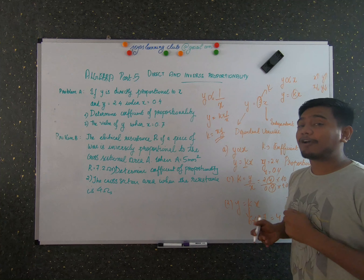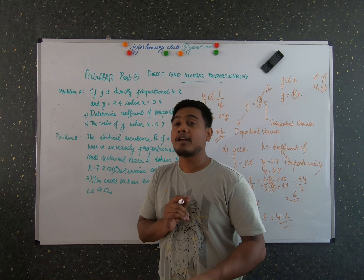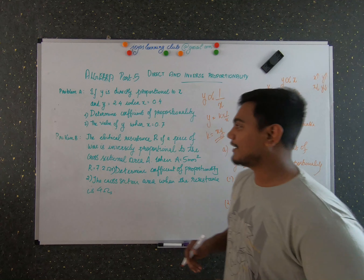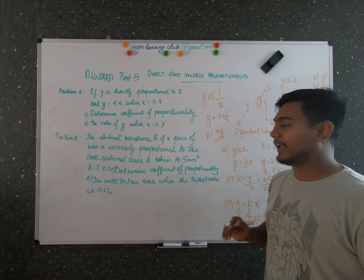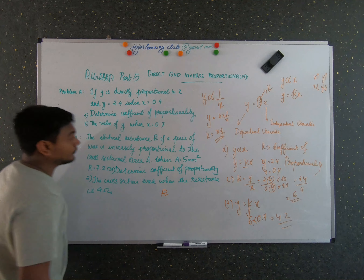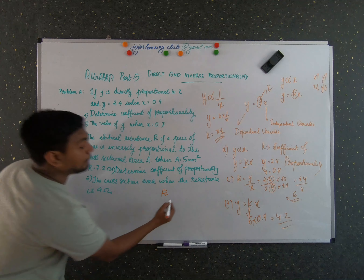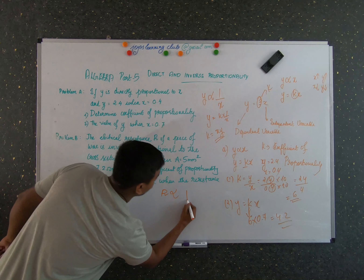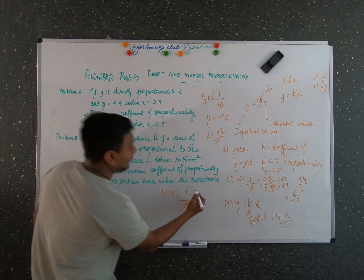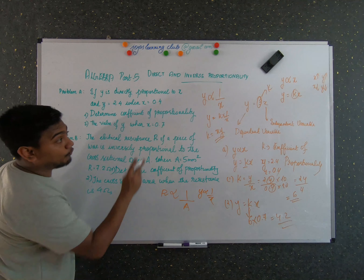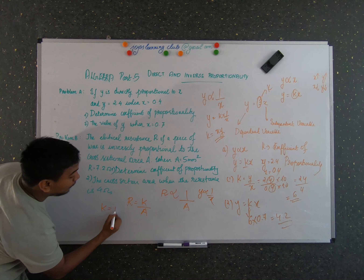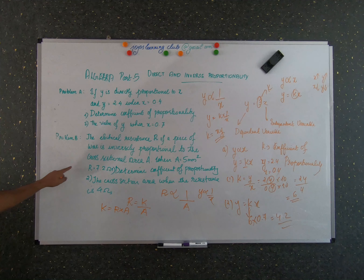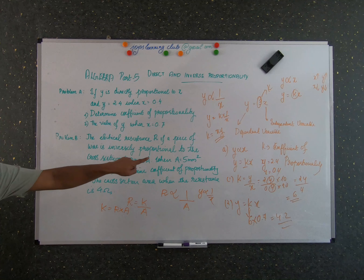This is all about direct proportion. Now let's do another problem using inverse proportion. The problem states: the electrical resistance of a piece of wire is inversely proportional to the cross-sectional area. The resistance r is inversely proportional to the cross-sectional area a, similar to the formula y is proportional to 1 by x. So R is equal to k by a, meaning k is equal to R times a. The first part is to determine the coefficient of proportionality.